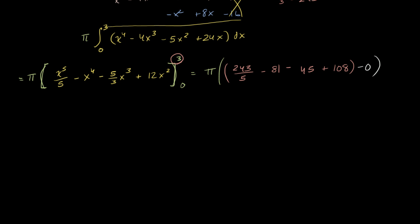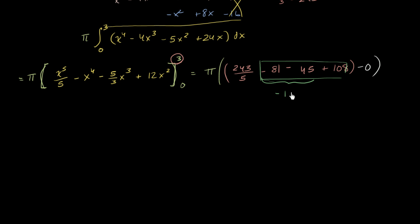First let's simplify everything except the fraction part. We have negative 81 minus 45, which gives negative 126. Then negative 126 plus 108 — that's the same as negative 26 plus 8 — which is negative 18. So this whole thing simplifies to negative 18.